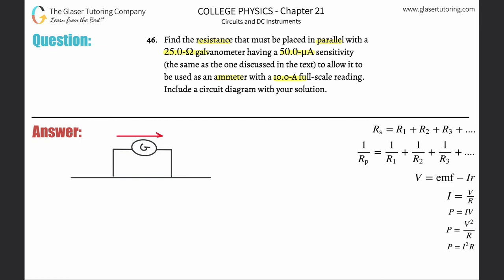They told us the current that's going to pass through it - they said it's going to have a 50 microamp sensitivity. We're going to need that in terms of amps, so simply take the 50 and multiply it by 10 to the minus sixth to get it into amps. We also know the resistance inside of this galvanometer.